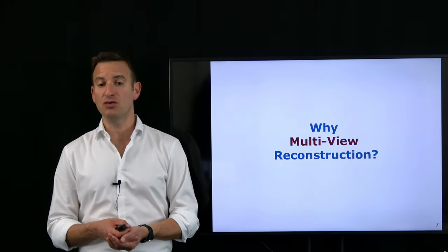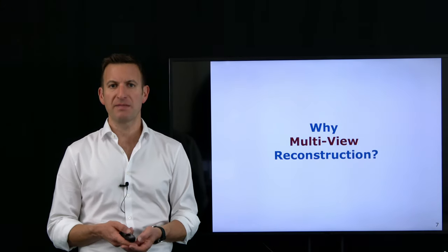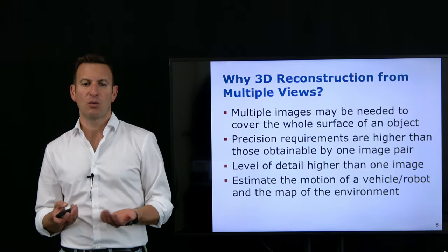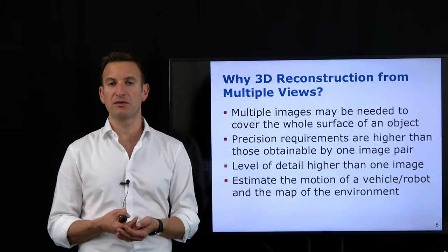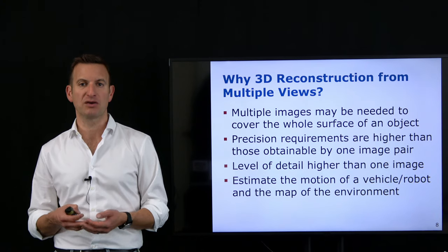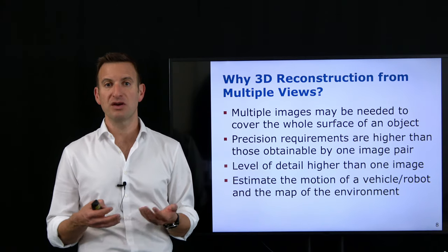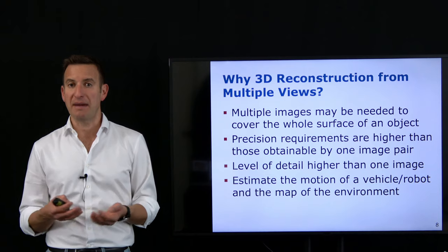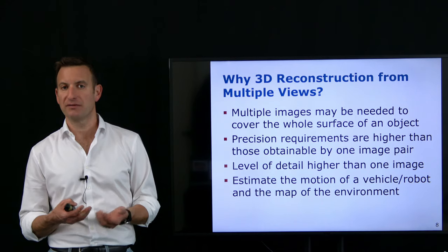Why do we want to do multi-view reconstruction? Why are two images not enough? There can be several reasons. One is that the object has a too complex surface so that two images are not sufficient to picture the whole surface. Or the resolution that one or two images can provide is not sufficient to fulfill the precision constraints, and we may need multiple images to get an accurate reconstruction.